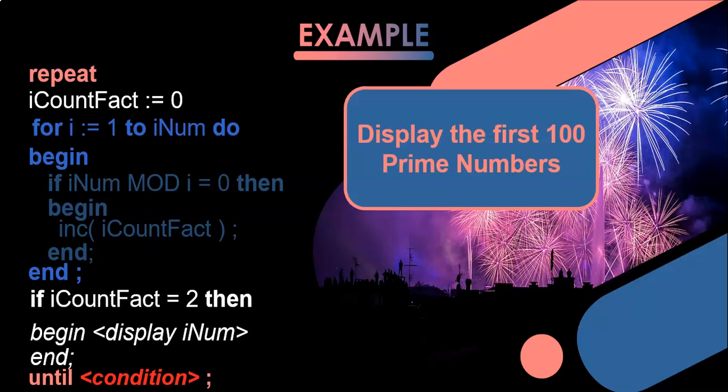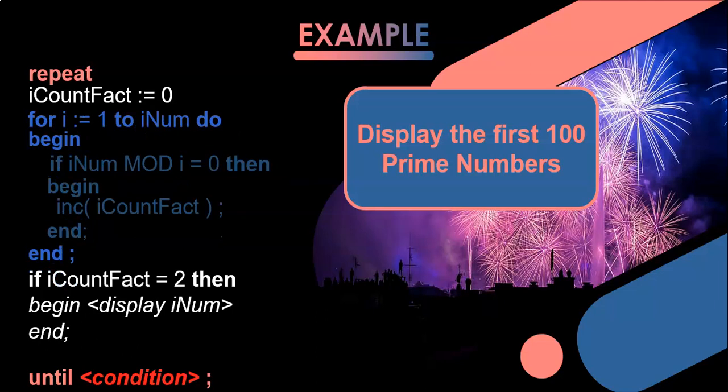We're going to repeat until something. The problem is I'm not going to check if rNum is a prime number a hundred times — I want to check if one is a prime, then two. I need a looping variable that will become rNum. So rNum needs to become a looping variable. I'm going to initialize it to one, and then inside the loop we need to increase rNum.